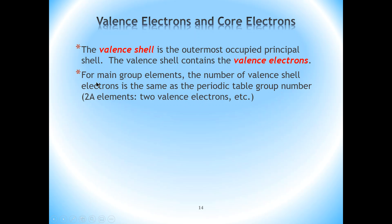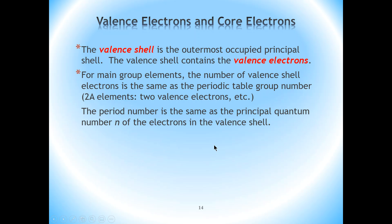For the main group elements, the number of electrons in the valence shell would be the same as the group number. For example, elements in group 2A would have two valence electrons, and elements in group 6A would have six valence electrons. Also, the period number is the same as the n value for the electrons in the valence shell.